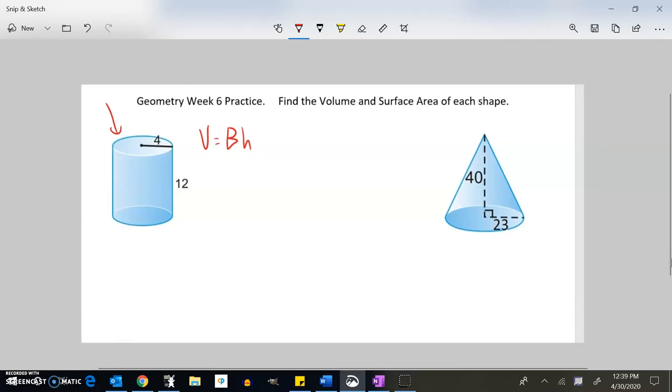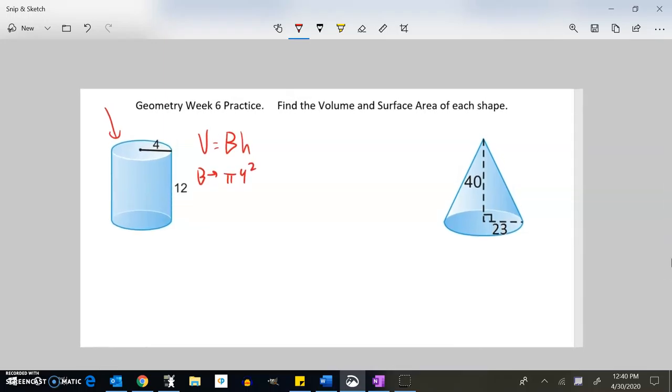The base is this circle here. The base area is π times the radius squared. Notice the radius is 4. On some problems it'll be 8, showing you the diameter. Remember you want to use the radius. So the base is 16π. That's the area of the base.